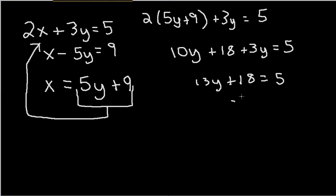Now you want to subtract 18 on both sides. So now you have 13y equals negative, because 5 minus 18 or 5 plus negative 18, same thing, which is negative 13 divided by 13. Y is equal to negative 1.